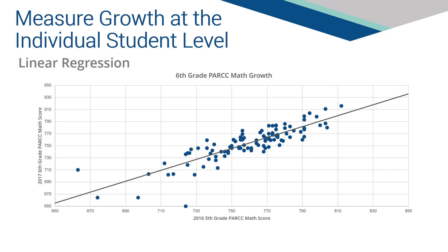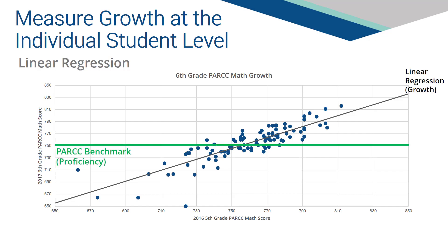Let's take a look at how growth differs from proficiency and how patterns of growth and proficiency may affect school quality ratings. This scatter plot overlays the PARCC proficiency benchmark with the linear regression growth model. Examination of this graph reveals the main difference between proficiency and growth. You will notice that the PARCC proficiency benchmark is a horizontal line representing the score needed to meet the state proficiency standard.